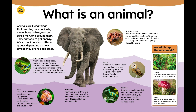Are all living things animals? Plants don't eat food — they make food from sunlight and carbon dioxide gas. Fungi include mushrooms, mold, and yeast. They are living things related to plants and animals.